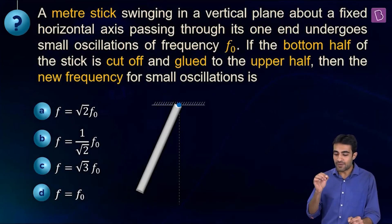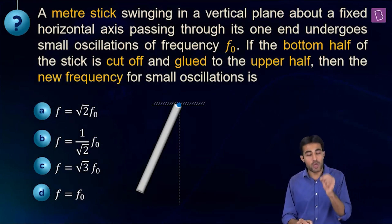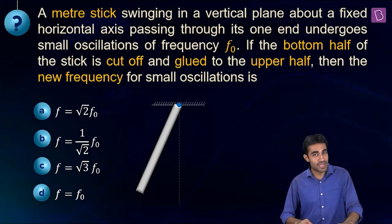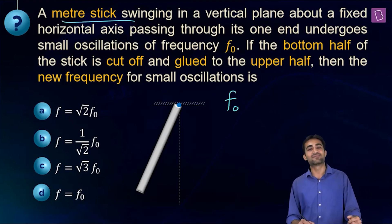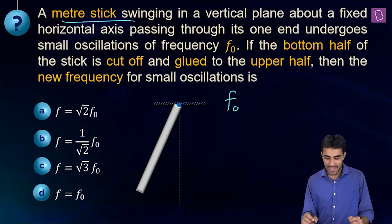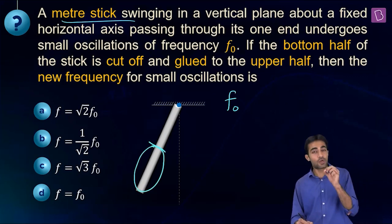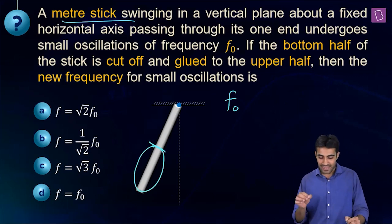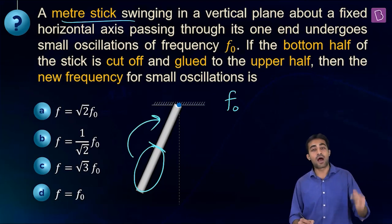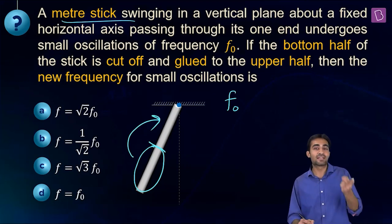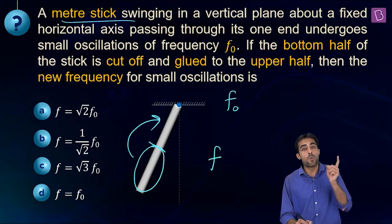A meter stick swings in a vertical plane about a fixed horizontal axis through one end, with frequency f0. The stick has length L = 1 m. If the bottom half is cut off and glued to the upper half, mass remains the same but the length becomes L/2. We need the new frequency f.